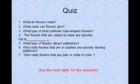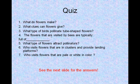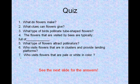Now let's take a little quiz. Number 1: What do flowers make? Number 2: What clues can flowers give? Number 3: What type of birds pollinate tube-shaped flowers? Number 4: The flowers that are visited by bees are typically full of... Number 5: What type of flowers attract pollinators? Number 6: Who visits flowers that are in clusters and provide landing platforms? Number 7: Who visits flowers that are pale or white in color?